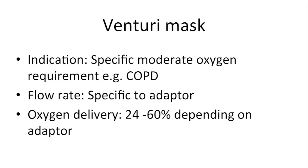Venturi masks are used in situations where patients may have COPD or other risk factors for type 2 respiratory failure, and high concentrations of oxygen may need to be avoided. Aim for oxygen saturations of between 88 and 92%. A 28% Venturi mask at 4 litres per minute can be used whilst an ABG is obtained.